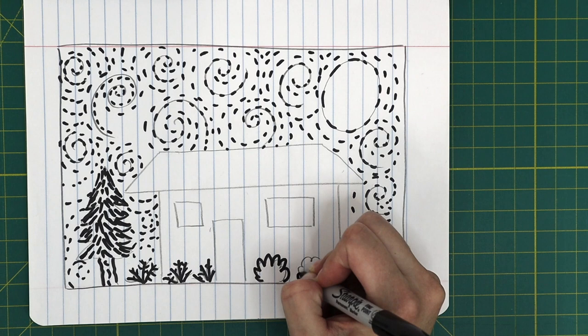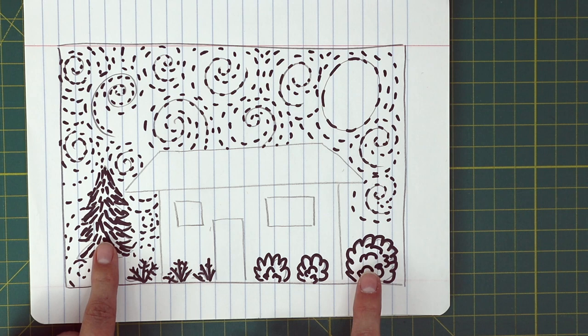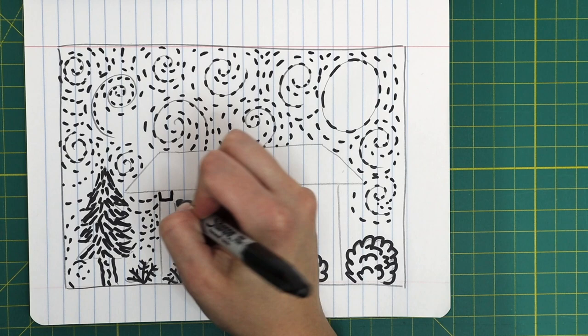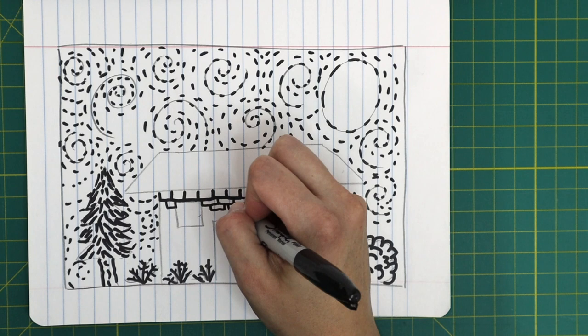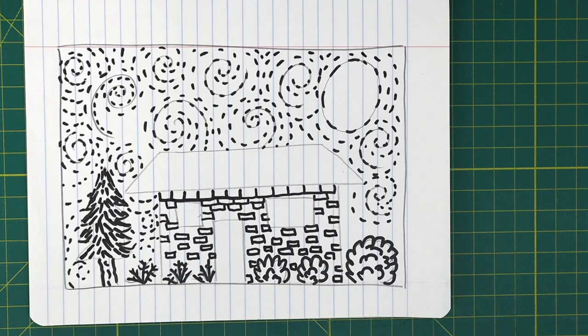Notice the difference between short, straight lines and curved lines. Curved lines imply a smoother and softer texture. Now add texture to your home. My house has bricks, so I will fill it with rectangles to imply a hard surface. For my roof, I will add horizontal and vertical lines.